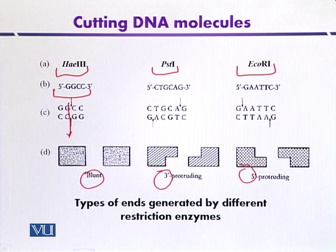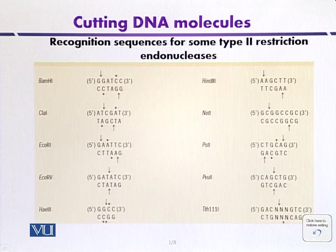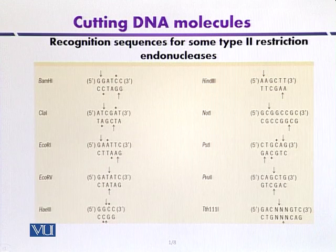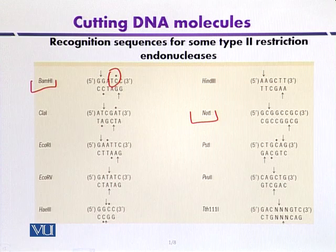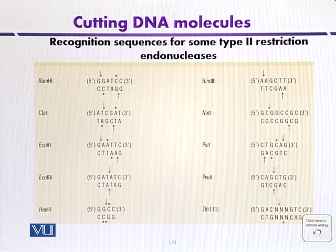The DNA attacked by restriction enzymes can produce different types of termini. Other examples include BamHI, which can recognize a 6 base pair sequence, and asterisks indicate the site of methylation. Some enzymes can recognize 8 base pair sequences, like NOT1. So, different types of restriction endonucleases exist that can recognize different target sequences and produce different fragments.